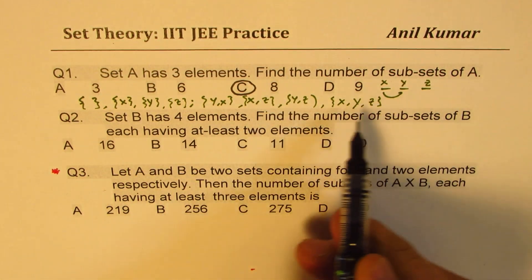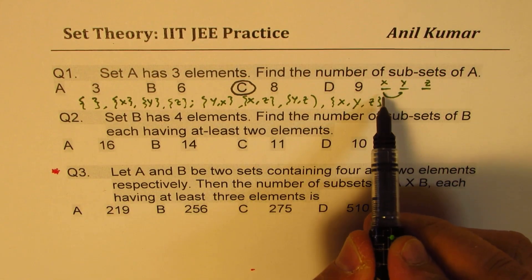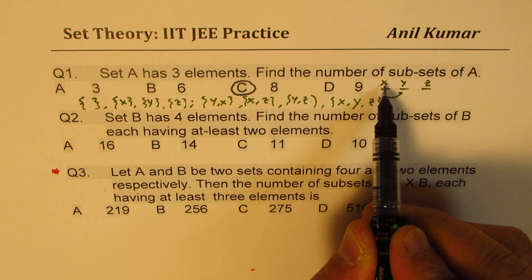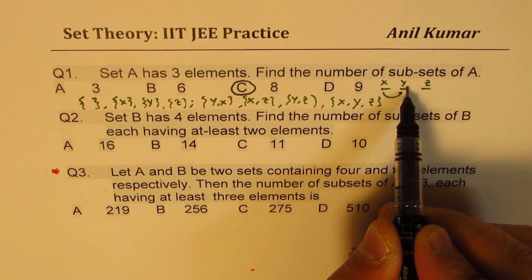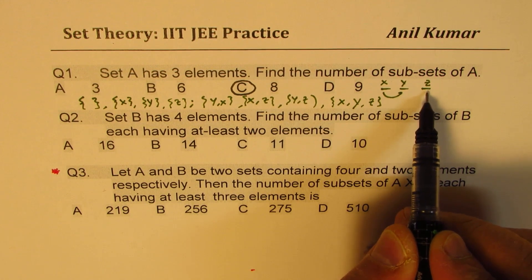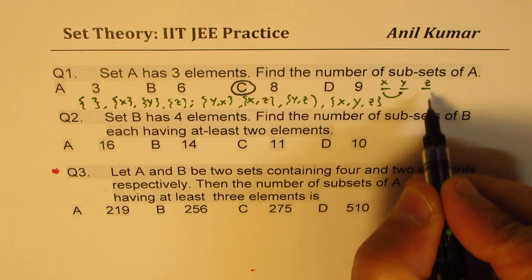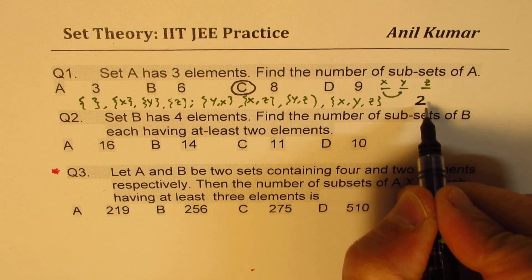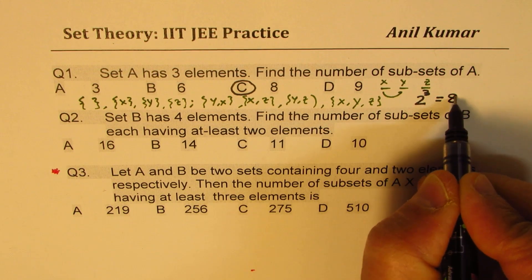Now one way to find the solution is like I did. Now that takes a huge amount of time. The other way is to think about it like this: I could take X or I may not take. I may take Y or I may not take Y. I may take Z or I may not take Z. So that means for each element I have two choices, and we have three elements. So 2 to the power of 3 gives us 8.